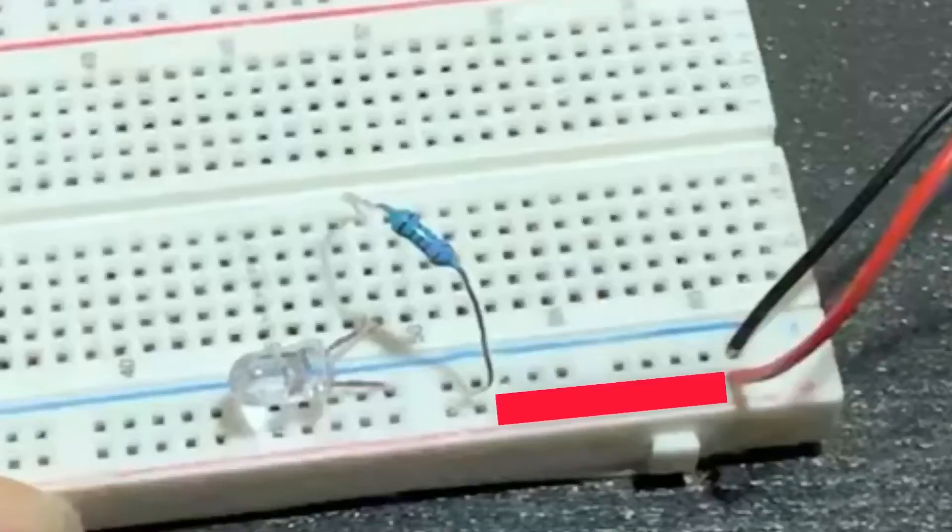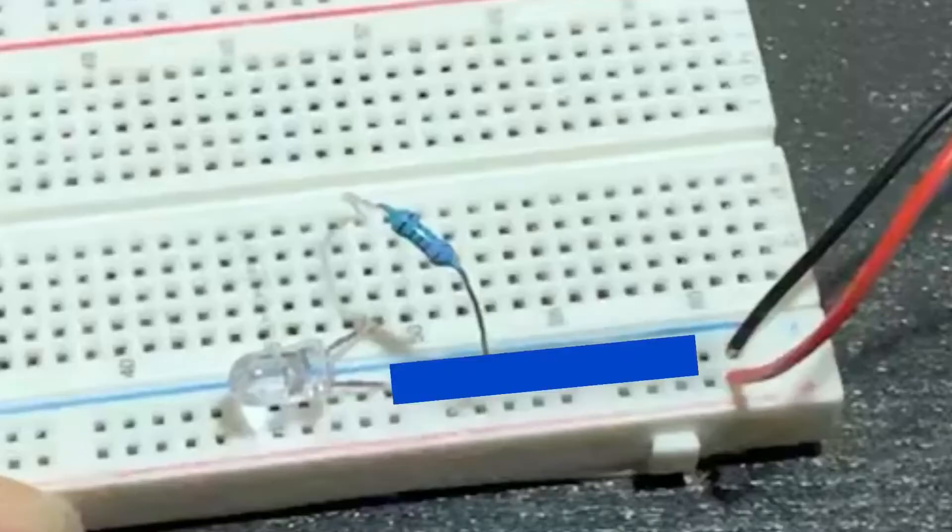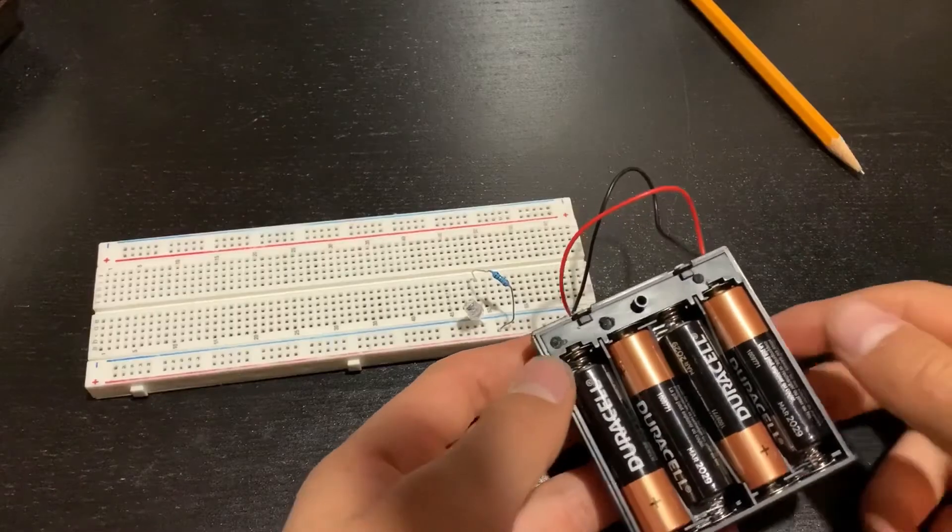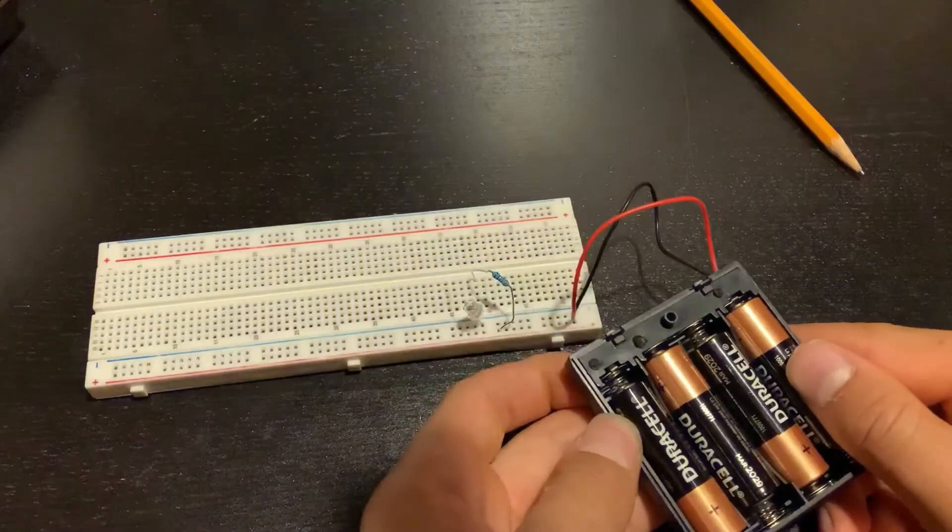Now the positive rail and the resistor are connected. The negative rail and the LED are connected. And the resistor and the LED are connected. Now we can turn on our power source, and as you can see, the LED will light up.